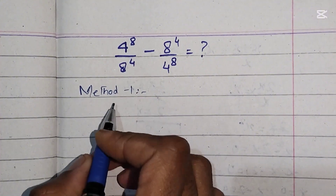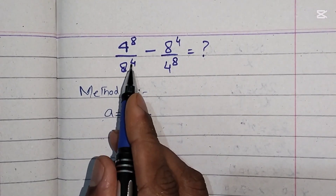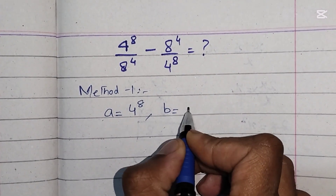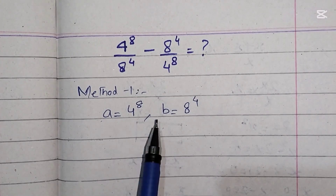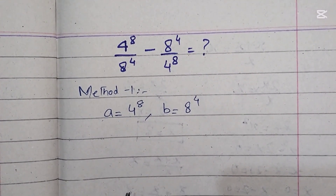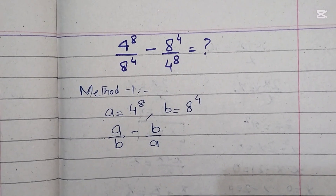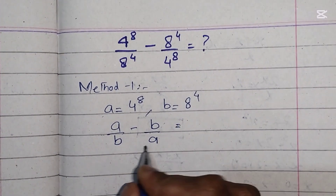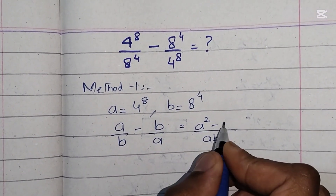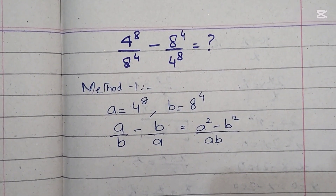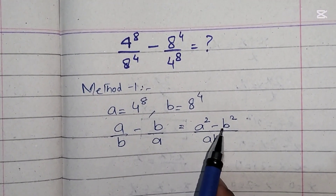Method one: we will let 4 power 8 as variable a, so a equals 4 power 8, and we let 8 power 4 as variable b. We have supposed a and b as variables for the numerator and denominator respectively. We will plug a and b into the given equation, so it becomes a over b minus b over a. We take LCM as ab, giving us a squared minus b squared over ab.